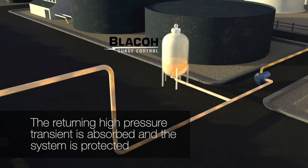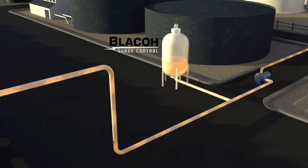The internal bladder oscillates, dampening and stabilizing the fluid pressure, protecting the system from potentially catastrophic negative vacuum conditions.